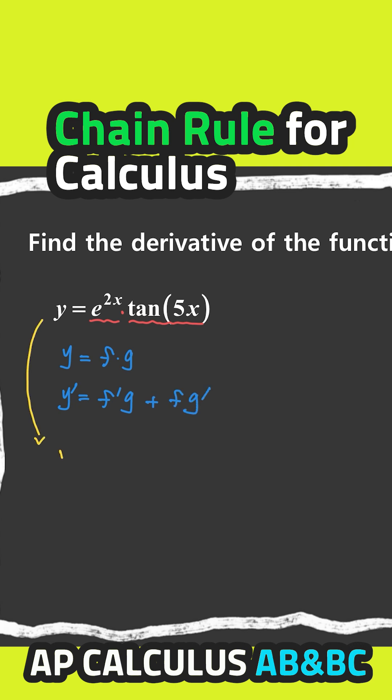So the derivative of this function, y prime is equal to the derivative of e to the 2x, so e to the 2x times the derivative of 2x. That's the chain rule, right?